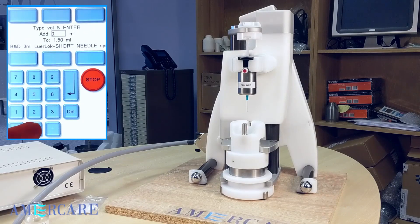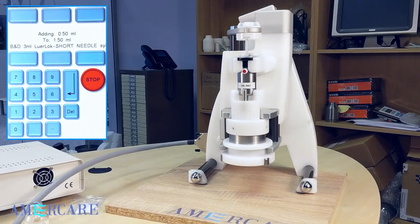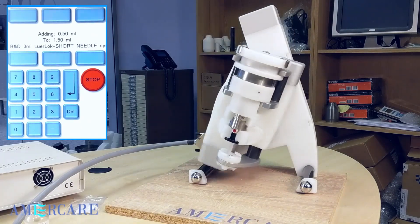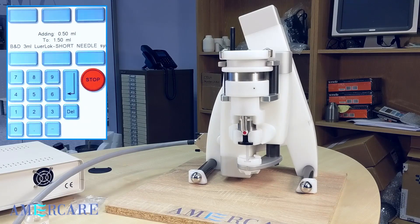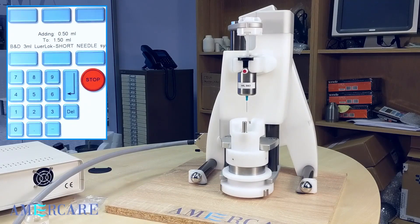In this example, we are adding 0.5 milliliters. Press enter to lift the shield up. The unit will invert and draw the additional volume required. It will then invert, lower the carriage and move the syringe into the unload position.